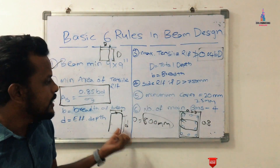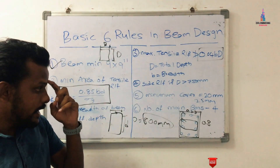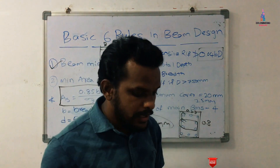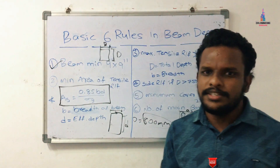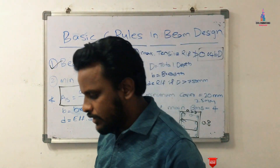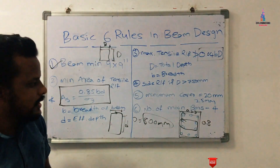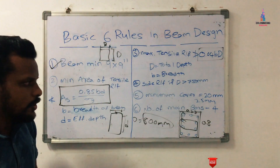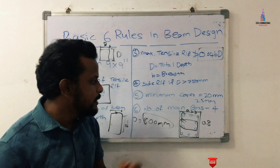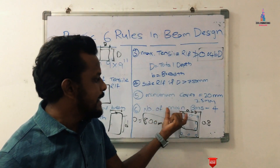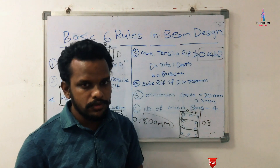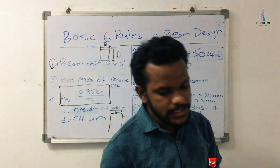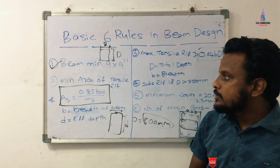The sixth rule: minimum number of bars. For ground-story or low-loading structures, as per IS 456 codal provisions, the minimum number of bars to be provided in a beam section is four bars.